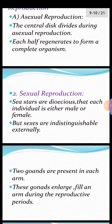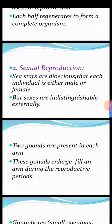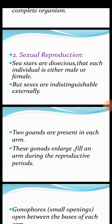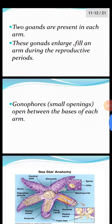The second method is sexual reproduction. Sea stars are dioecious, meaning each individual is either male or female. However, the sexes are indistinguishable — they cannot be distinguished easily externally. Gonads are the reproductive organs; two gonads are present in each arm. These gonads fill the arm during reproductive periods. Gonopores are small openings that open between the base of each arm.